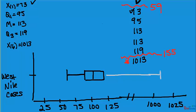1013 is an outlier. So instead, it gets a star, and we don't connect the box plot all the way out to that number.